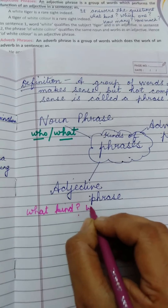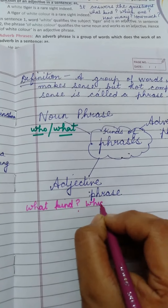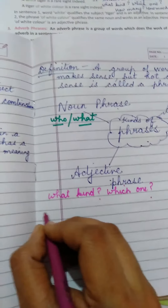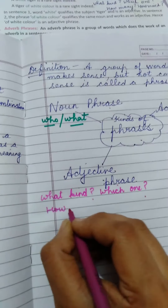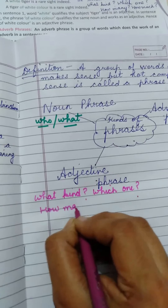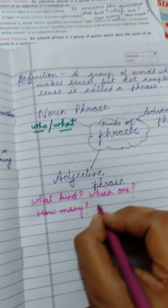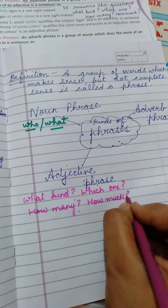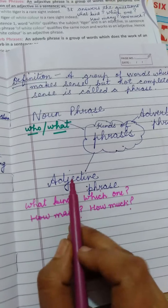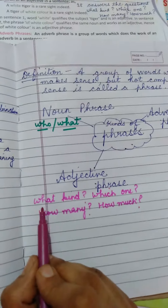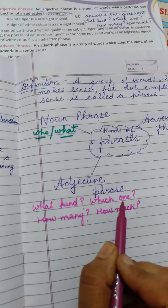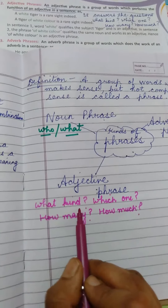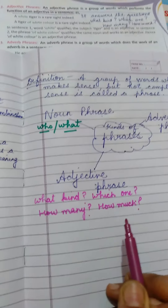Write again: what kind, which one, how many, how much. This is about adjective phrase. It answers the questions for what kind, which one, how many, how much.